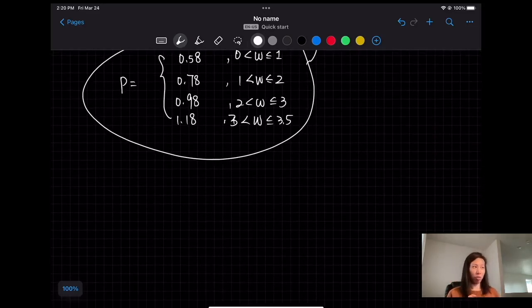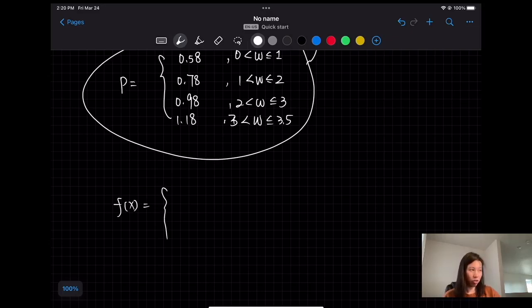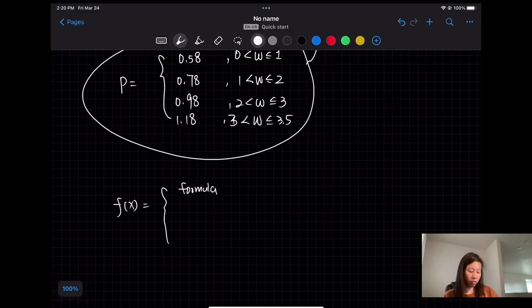So in general, a piecewise function is a function in which the formula used depends upon the domain the input lies in. So we notate the function something like f(x) equals the first formula if the domain is to use the first formula.